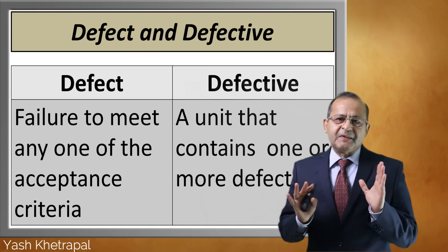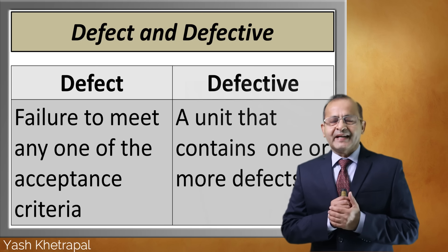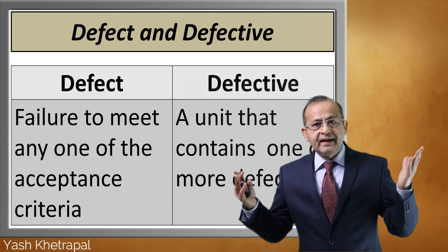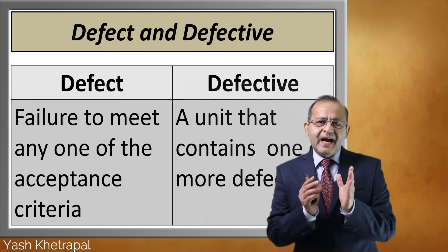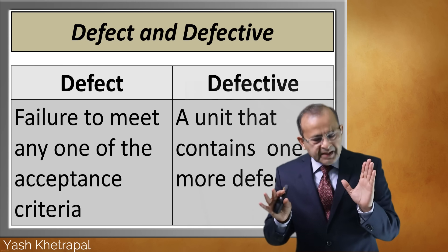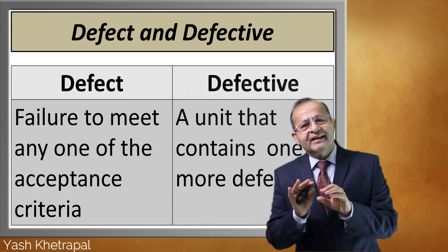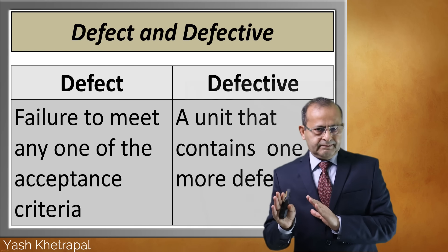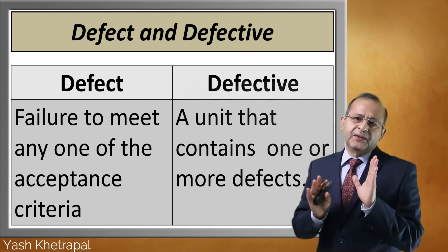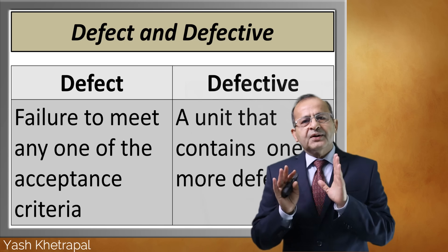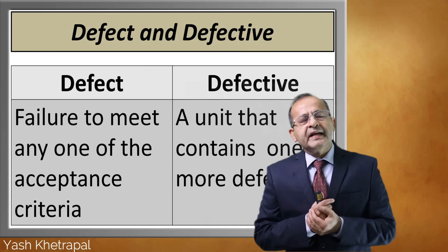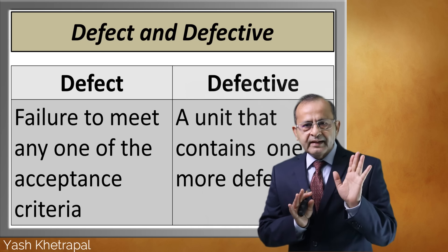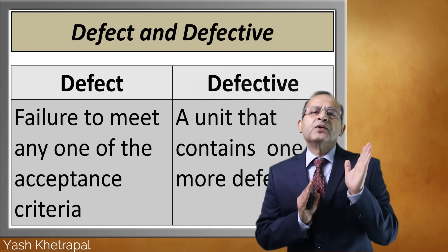What is the difference between defect and defective? Engineers often get confused between these two. I will simplify this. Defect is equivalent to 'bimari' (disease), and defective is 'bimar' (sick person). Just like a sick person can have more than one disease, similarly a defective part can have multiple defects.